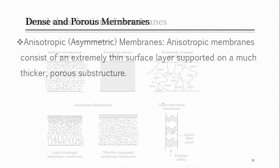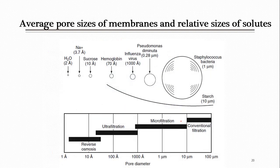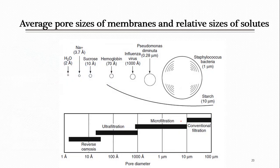In a broad classification, membranes have symmetrical and asymmetrical types. Symmetrical membranes are symmetric throughout their structure — they have more or less the same size pores, or are dense throughout, or electrically charged throughout. Anisotropic or asymmetric membranes have different pore sizes: the top surface may be non-porous or dense while there is a porous layer below, or there may be a polymer matrix with liquid-filled pores.